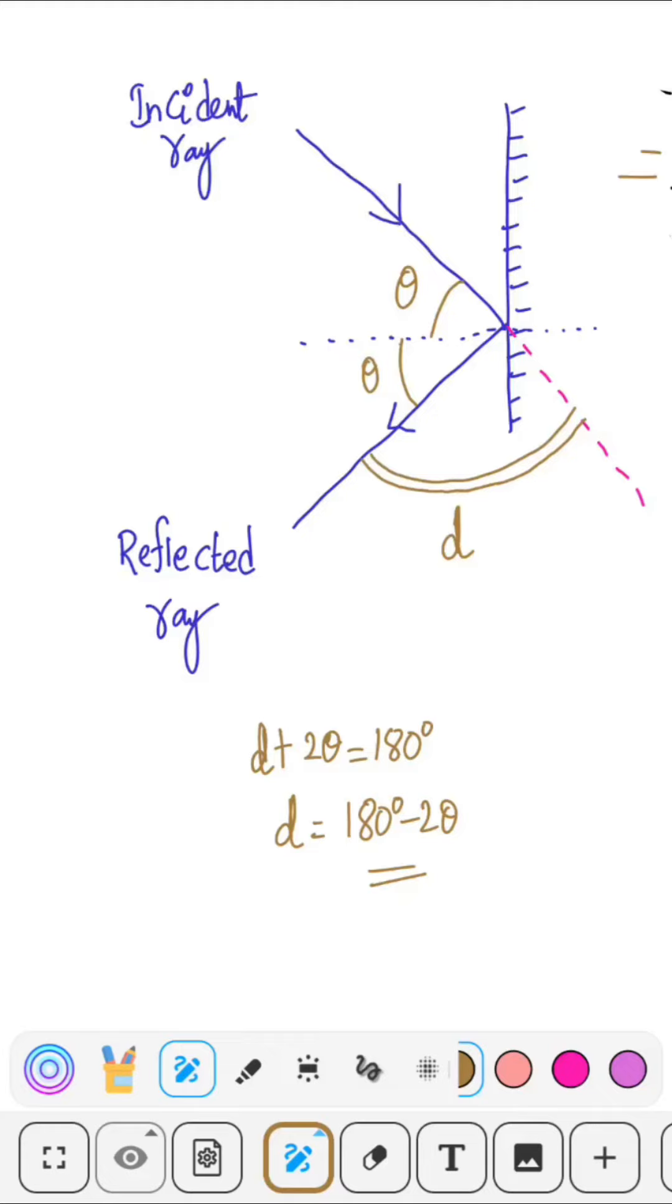For a plane mirror, it is very easy to find the angle of deviation. Let's consider this as a plane mirror. This is an incident ray making an angle of theta with the normal which is drawn at the point of incidence.